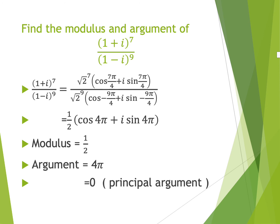According to the principal argument, 4π is equal to 0 radians.